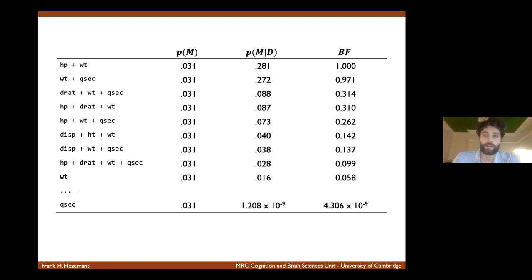If we perform a conventional regression analysis for all possible models, we can just look at for each model, how well does it fit the data? And we can see that the best model, which is at the top here, is using horsepower and the car's weight to predict the car's fuel economy. And it has the highest posterior probability and also the highest Bayes factor. But it's not a very convincing winner.